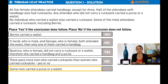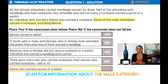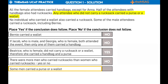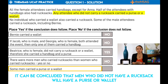Lastly, let's look at conclusion five: some men carried a purse or a wallet. Again, scan for information about the male category. We only get: some of the male attendees carried a rucksack, including Bernie. If only some of the male attendees carried a rucksack, it can be inferred that some did not carry a rucksack. Now ask yourself: does the keyword rucksack link to a purse or wallet? Scan the text again to find the sentence: any attendee who did not carry a rucksack carried a purse or a wallet. It can be concluded that men who did not have a rucksack will have a purse or wallet. So yes, the conclusion does follow.